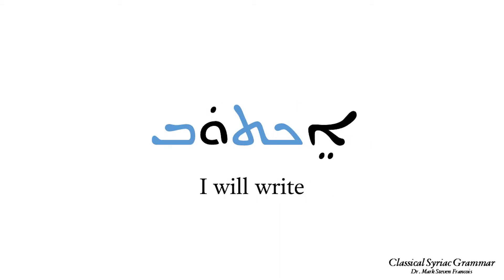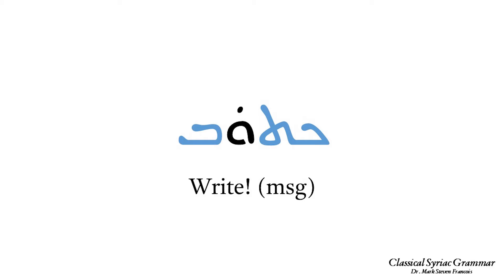The second example is the verb ekhtov, which means 'I will write.' Again we can see the three root consonants kaf, tau, and baith, and the prefix at the beginning tells us it's in the imperfect tense, first common singular. The third example is the verb kathav used as a command meaning 'write.' Again we see kaf, tau, and baith, and the fact that the verb has no prefix but otherwise matches the imperfect second masculine singular tells us it's in the imperative, second masculine singular.